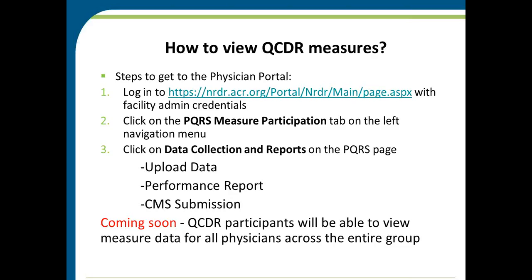To view the QCDR measures attributed to your physicians, you use the physician portal. Log into our NRDR platform with your correct credentials — whether you are a facility administrator, registry administrator, or physician user. Click on the PQRS Measure Participation tab on the left-hand side of your screen, then click Data Collection and Reports. That page is what we consider our physician portal, and there are multiple tabs to help you upload data, view your performance report, and select your measures for CMS submission.